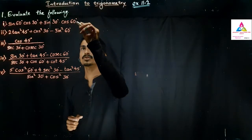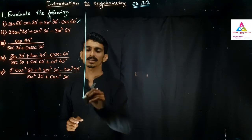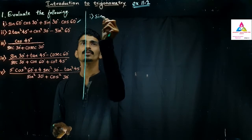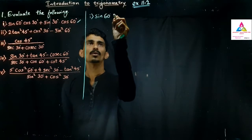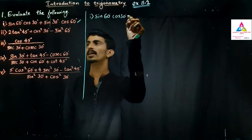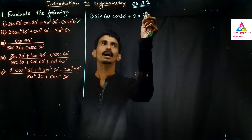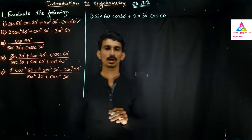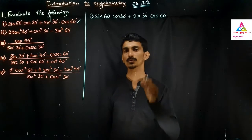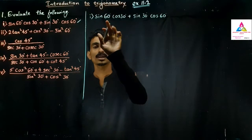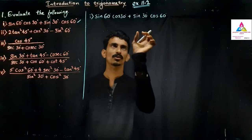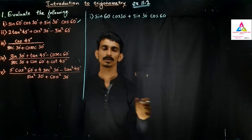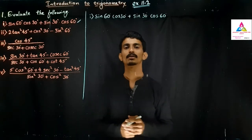Let us start with the first question. The first question is: sine 60° × cos 30° + sine 30° × cos 60°. When given the question, we first need to find the values of sine 60°, cos 30°, sine 30°, and cos 60°, and substitute those values.